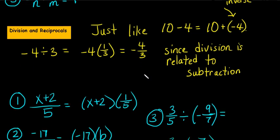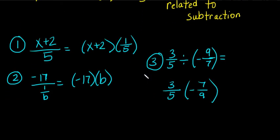And I did a couple of examples here, and that will be it for today. X plus 2 divided by 5 would equal x plus 2 times the reciprocal of 5, which is 1 fifth.